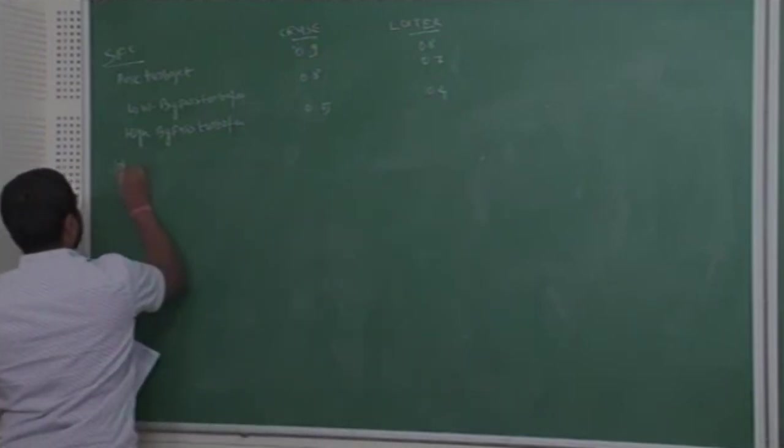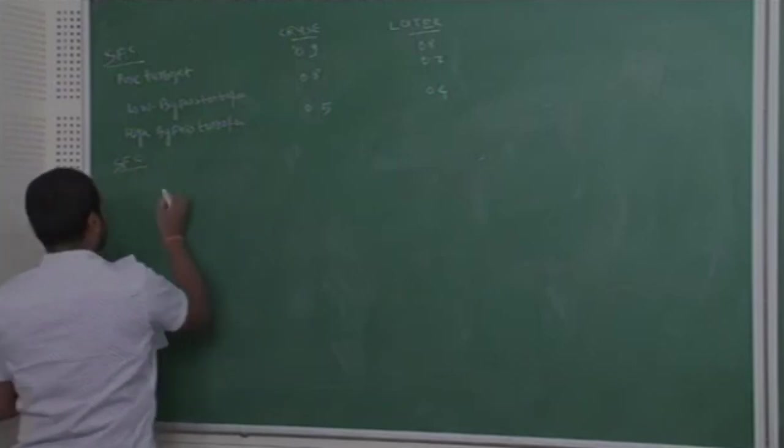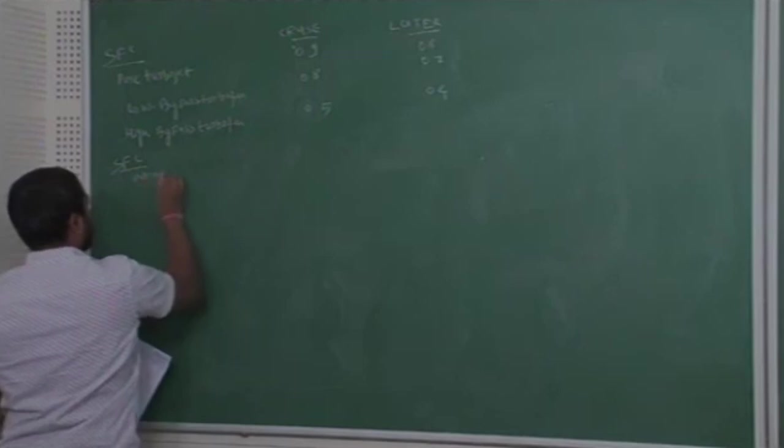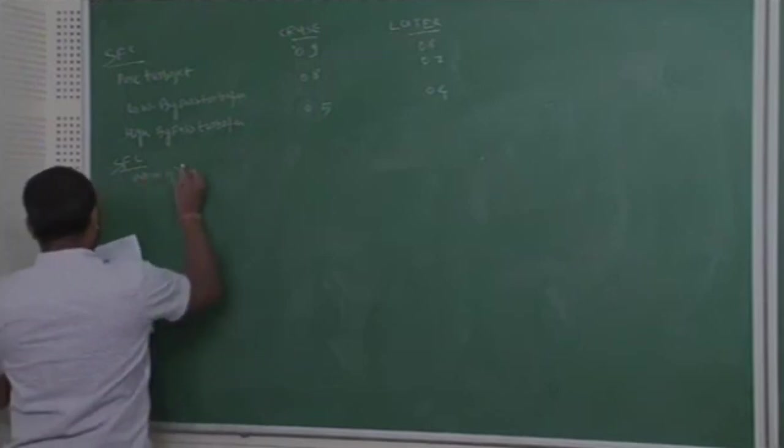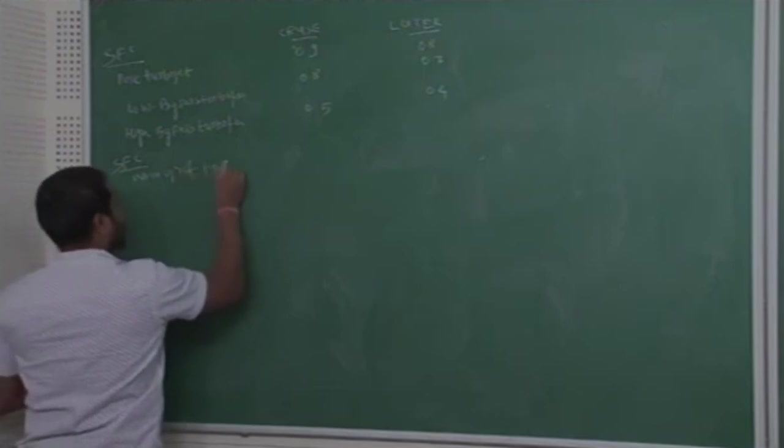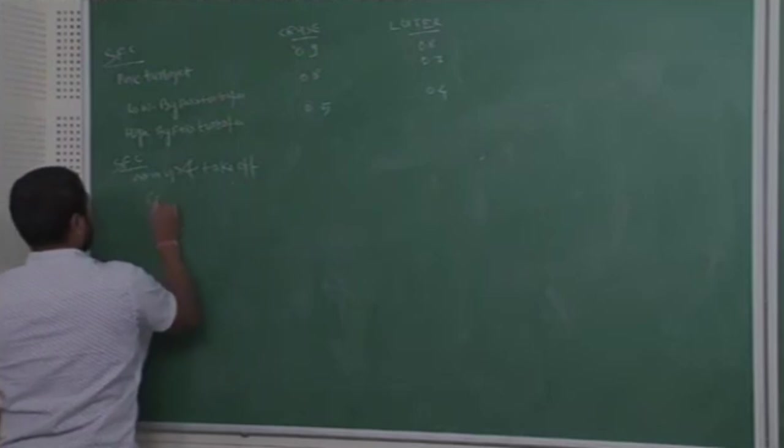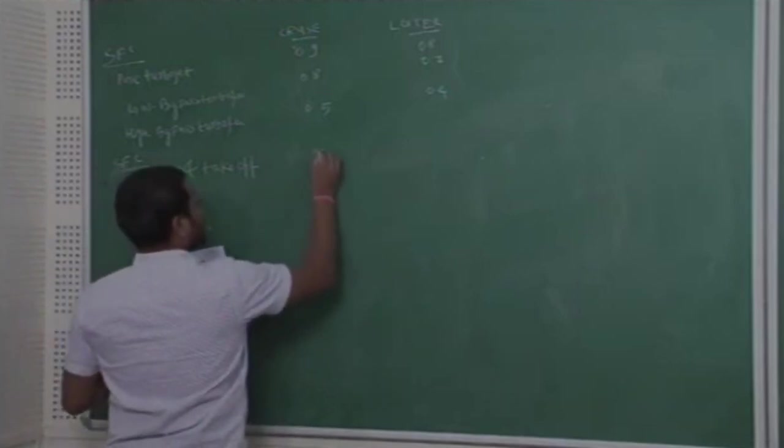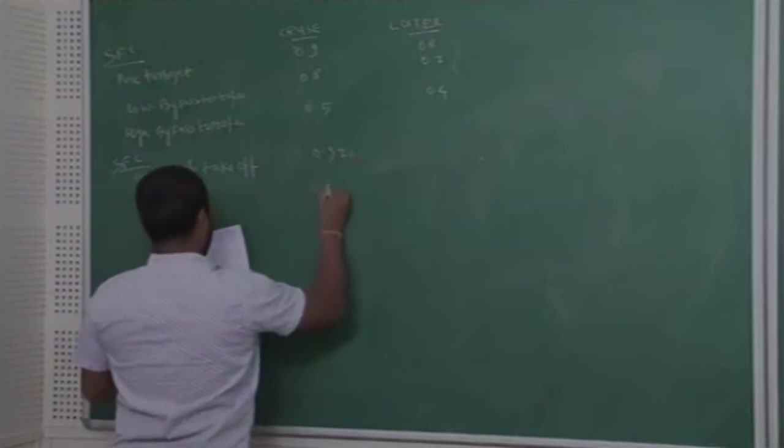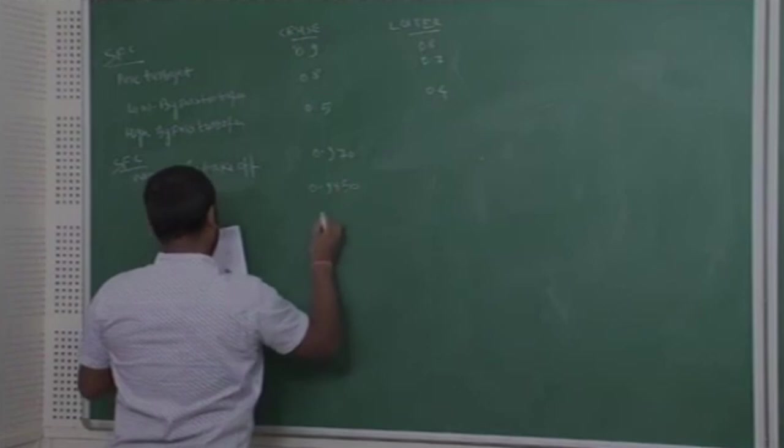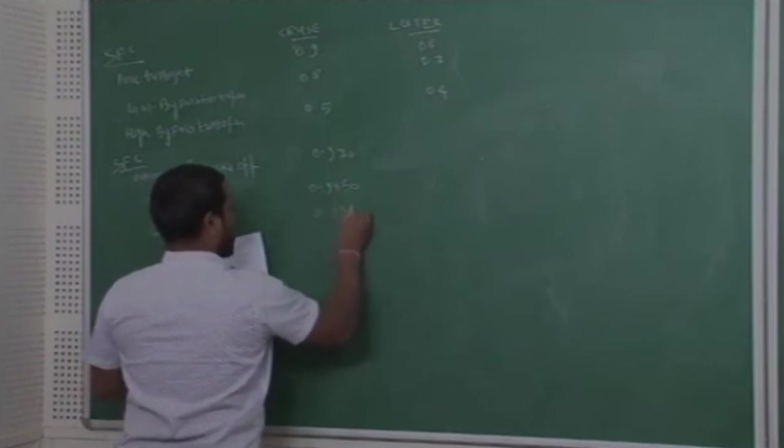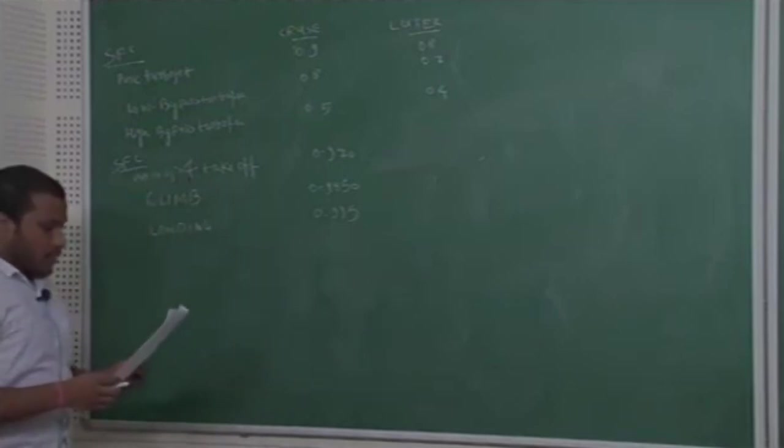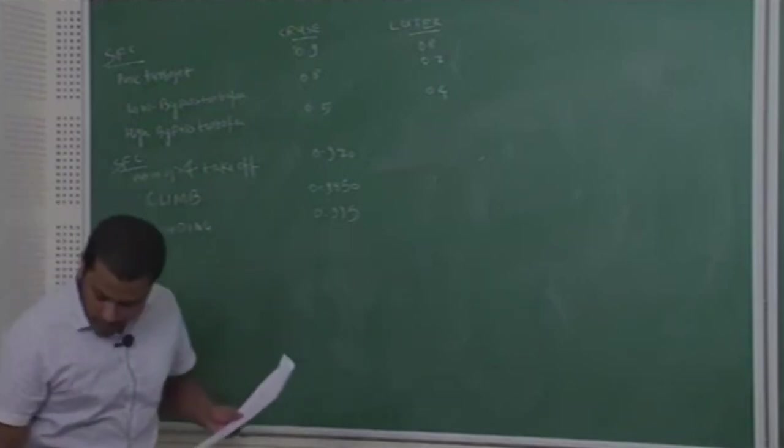And SFC for different weight fractions. Warm up and takeoff, climb and landing. So warm up and takeoff, climb and landing. 0.97, 0.985, and the mission is loiter, again loiter.